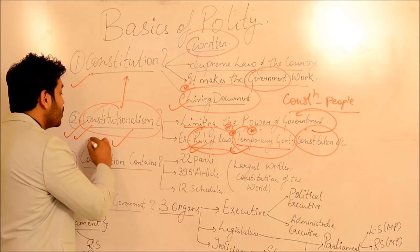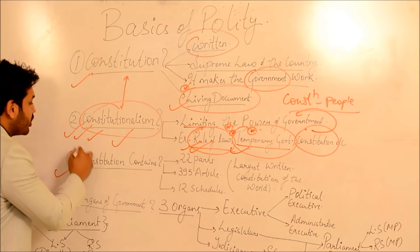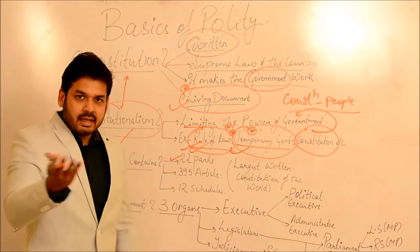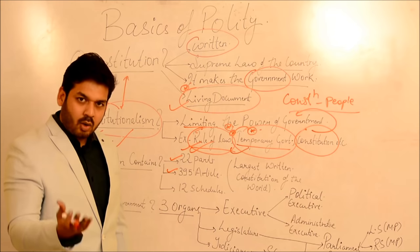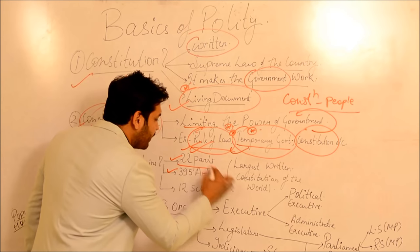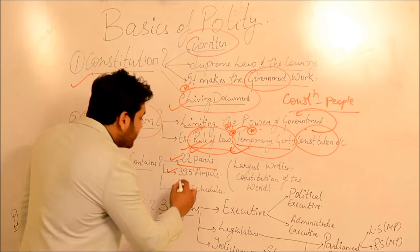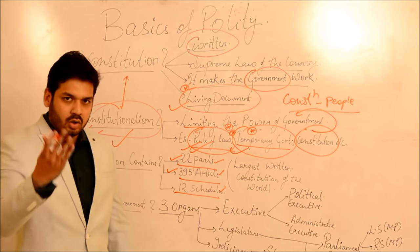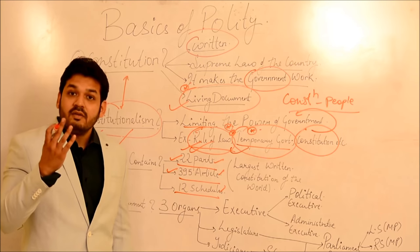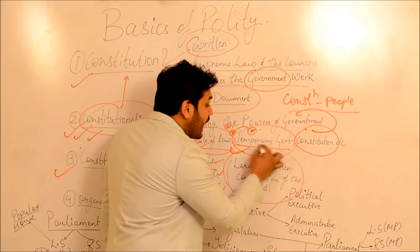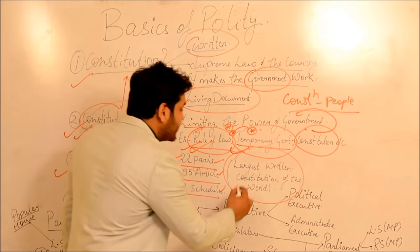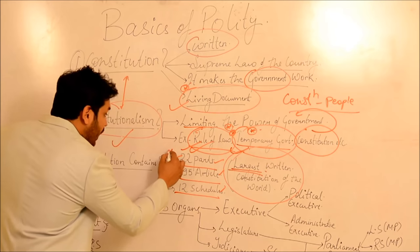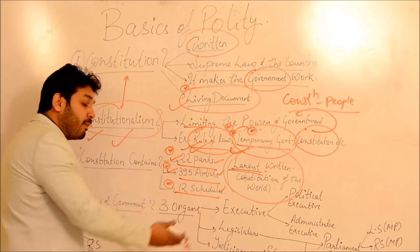Third point: what does the Constitution contain? Very basic points that come in Prelims - the Constitution has 22 parts, 395 articles, and 12 schedules. This can come in your Prelims exam, so note it down: 22 parts, 395 articles, 12 schedules. This makes it the largest written constitution of the world. Always remember: the Indian Constitution is the largest written constitution of the world.